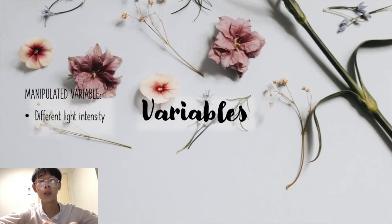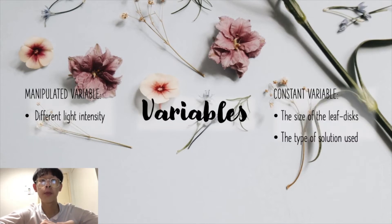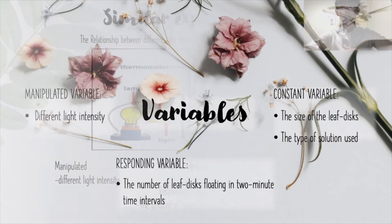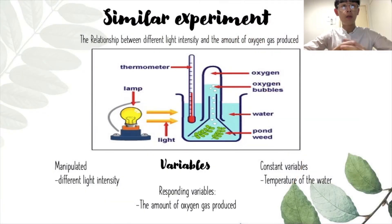Let's move on to the variables. The manipulated variables in this experiment is the different light intensity. The constant variables are the size of leaf disks and the type of solution used. The responding variables in this experiment will be the number of leaf disks floating in 2 minutes time intervals. Now, let's see one of the other experiments that is similar to our experiment.